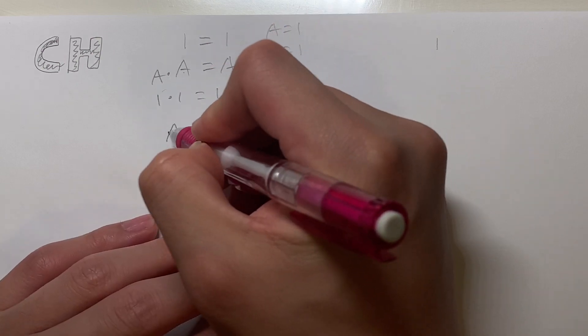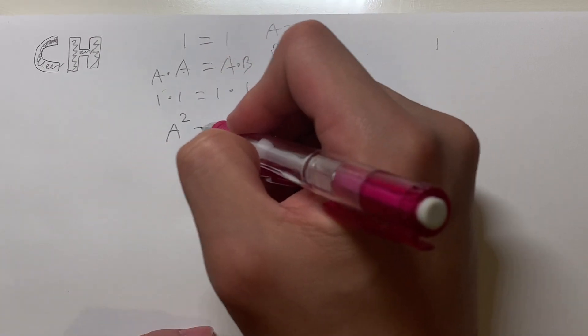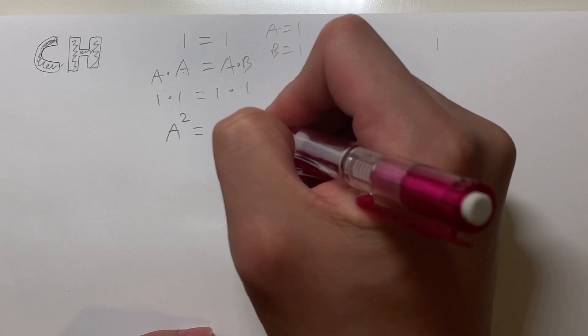So A times A gives us A squared, and then A times B is going to give us AB. We're just multiplying them.